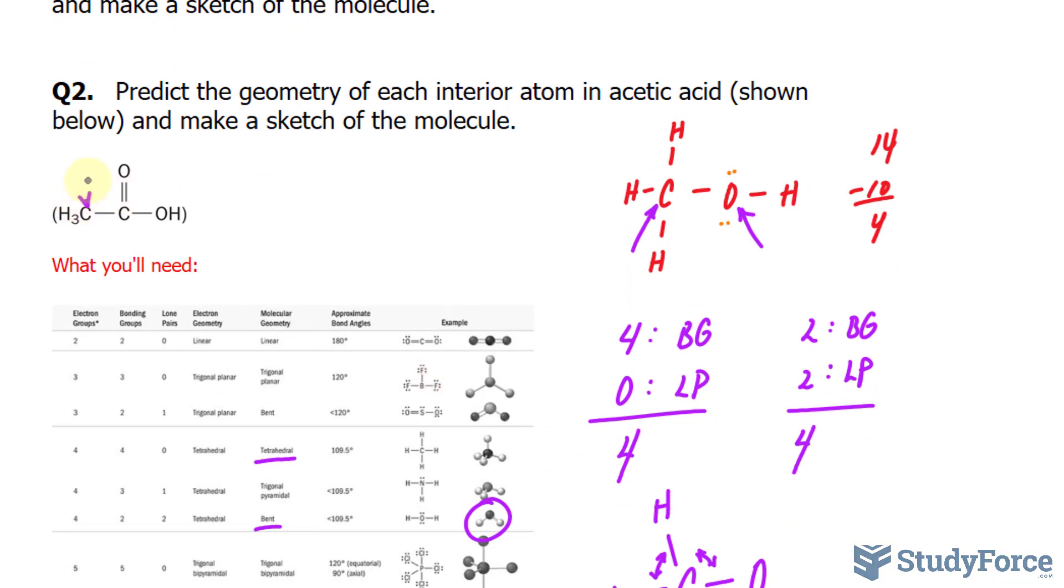One of the central atoms is this carbon, and another central atom is this carbon. And arguably, the oxygen is also a central atom, but we'll only focus on the two carbons. Starting with this carbon, it will have the same configuration as before, because technically, it's a methyl group. This carbon and the atoms surrounding it will have a molecular geometry of a tetrahedral. So this, again, will be tetrahedral.